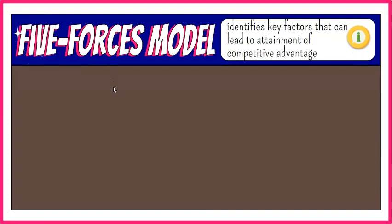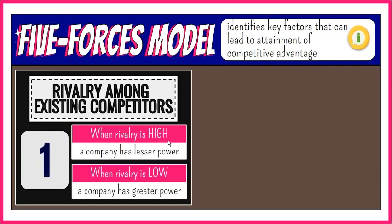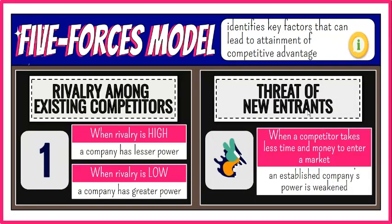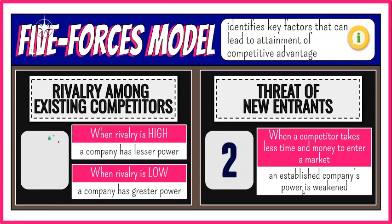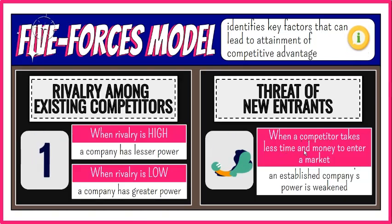The key factors are the following. First, rivalry among existing competitors — the power of a company is lessened when there is a large number of competitors and equivalent products and services they offer. Conversely, a company has greater power to charge higher prices and set the terms when competitive rivalry is low. Second, threat of new entrants — a company's power is affected by the force of new entrants into its market. An established company's position is weakened if it takes less time and money for a competitor to enter a market and be an effective competitor.